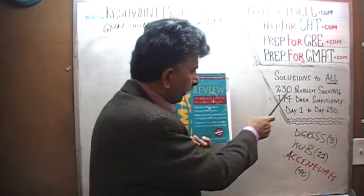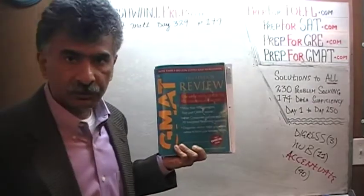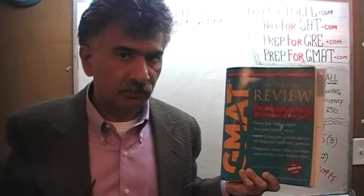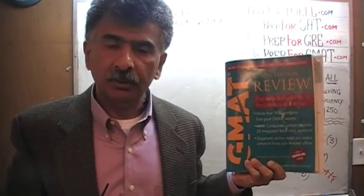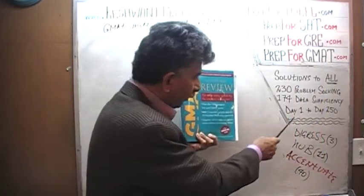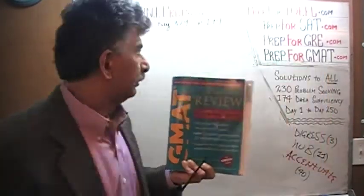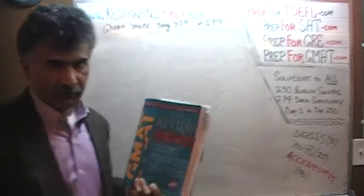If you do not own this book already, purchase one immediately — you are going to need it. The book contains 230 problem solving questions and 174 data sufficiency questions. We have already solved every single one of those problems. If you are interested in watching the original solutions, you will find them from day number 1 through 250. Right now we are in the process of redoing the problems and we are on page number 174.